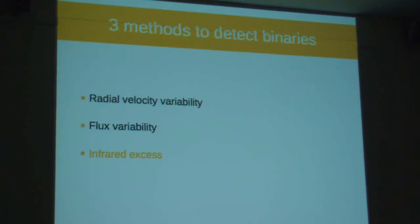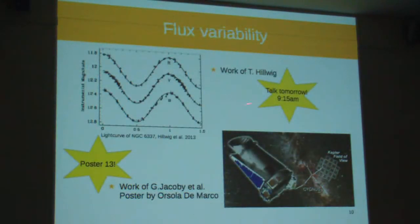So, methods to detect binaries. I'll just focus on three. You can think about more - radial velocity variability. This method has been tried in four surveys, but all the variability that has been detected, there has been no periodicity detected, and so intrinsic variability cannot be excluded as a cause of variability, so there has been no fraction that has been determined thanks to this method. The other method we can use is flux variability, and this is the talk by Tony Helweg tonight at 15, tomorrow morning, so a little bit of spoiler alert, and there's also some work that has been done with Kepler by George Jacoby.